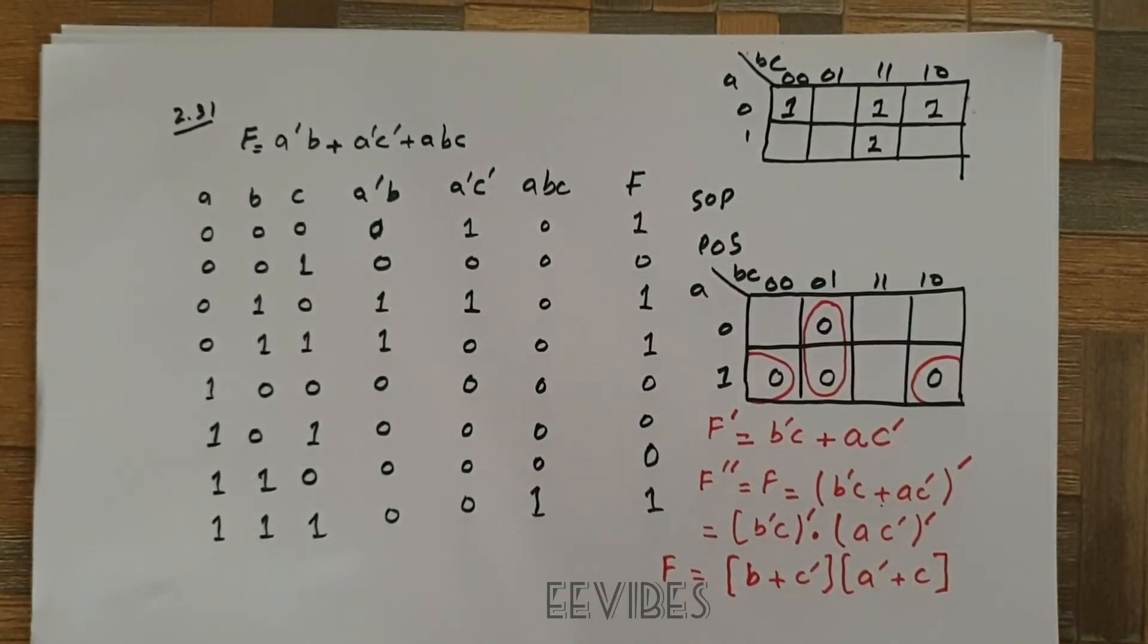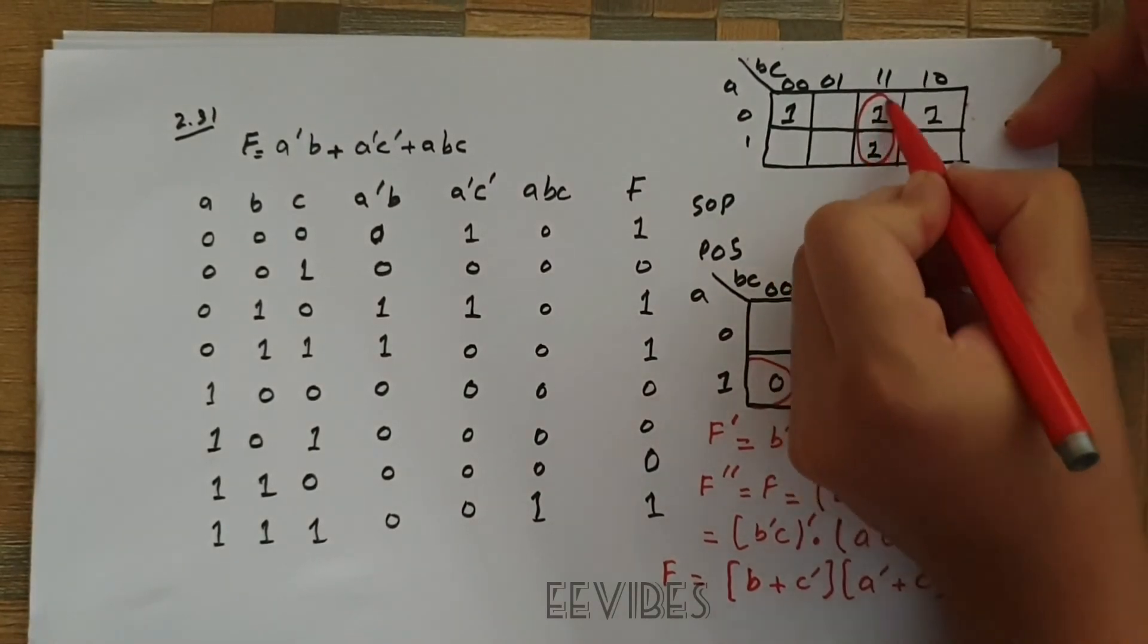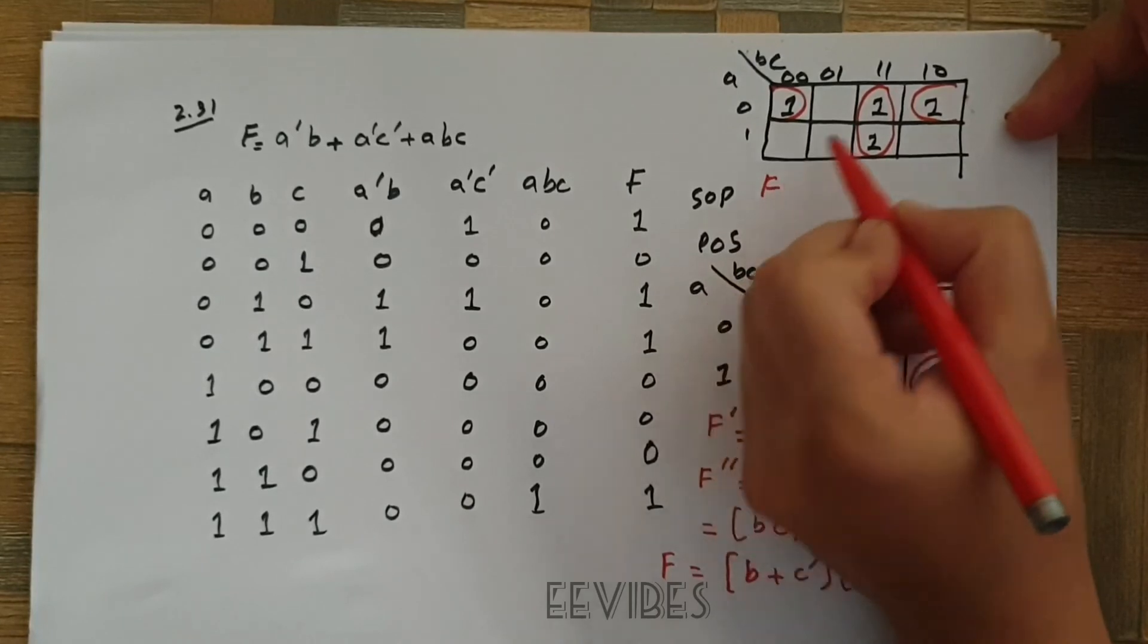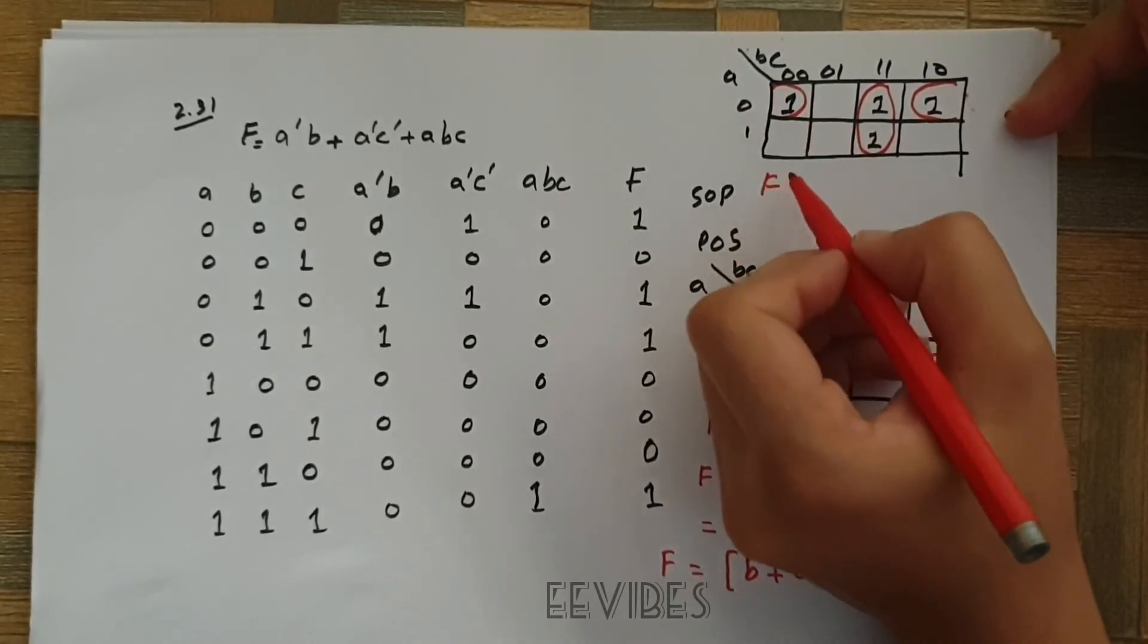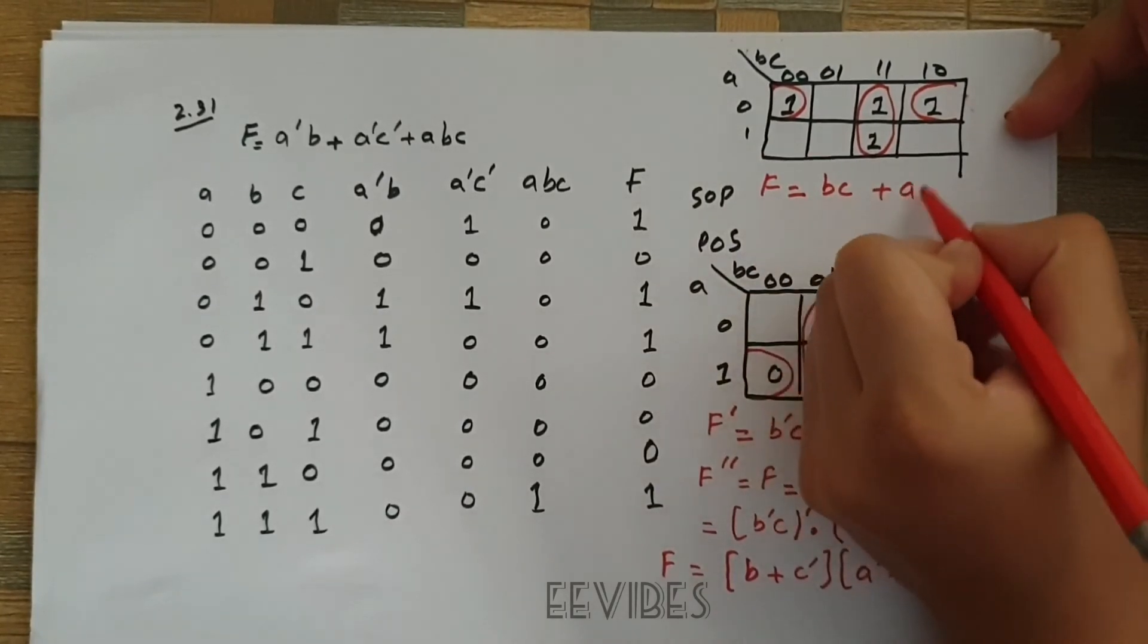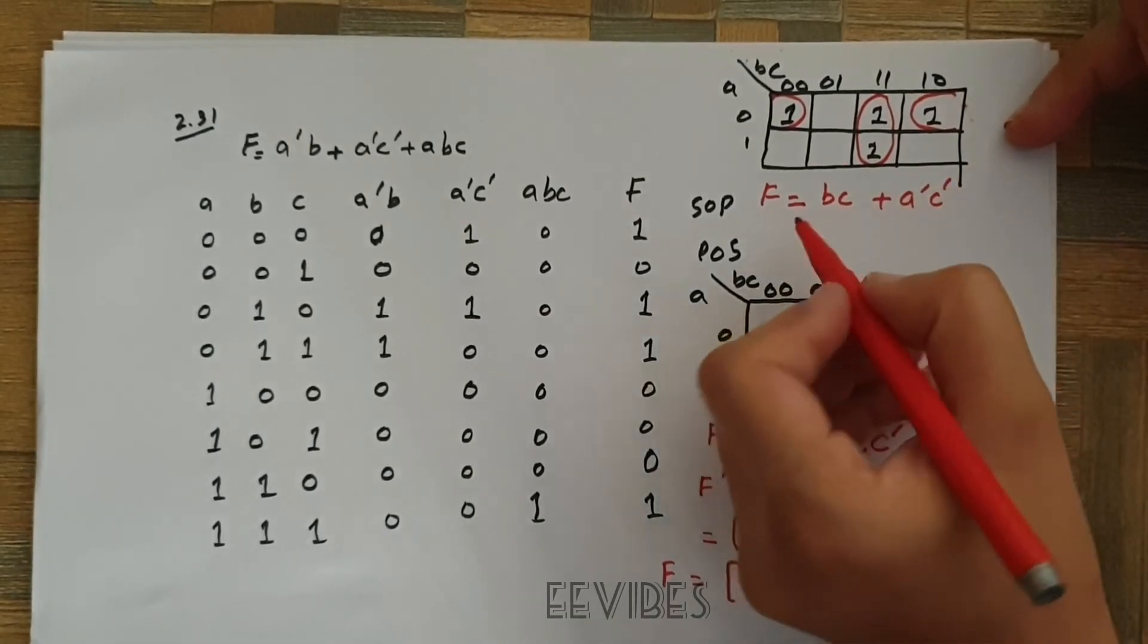Now combine the consecutive squares again. So we will merge these two ones and these two ones. And here we will see this is the actual function or the original function whose value is equal to bc plus a complement and c complement.